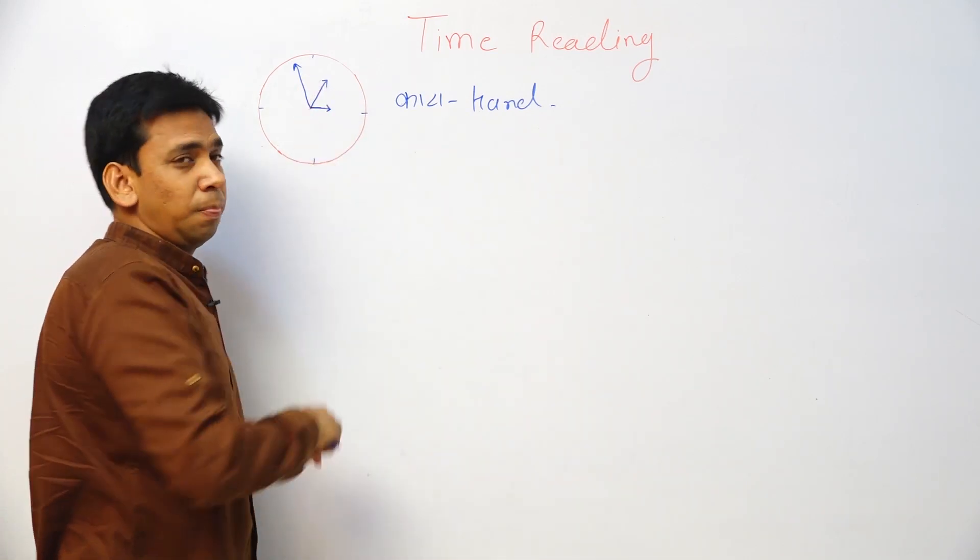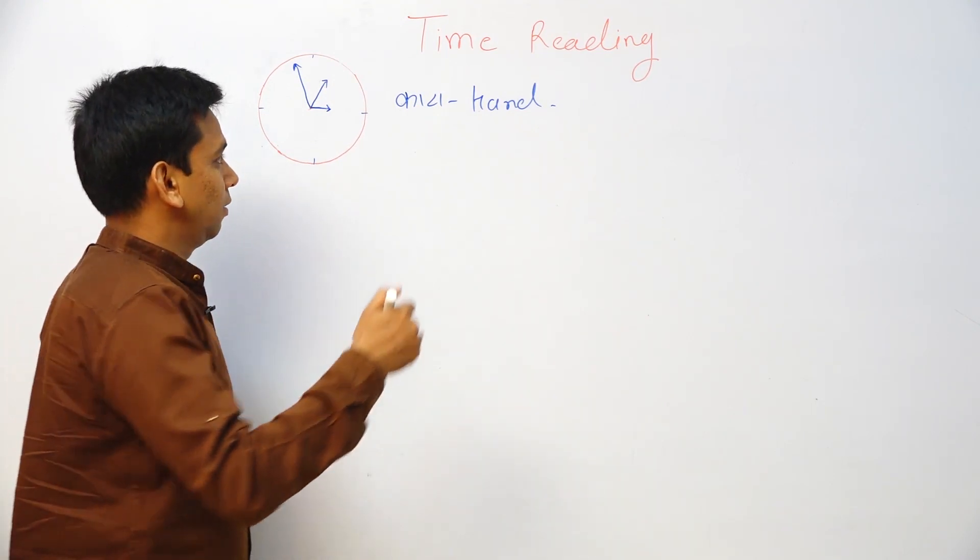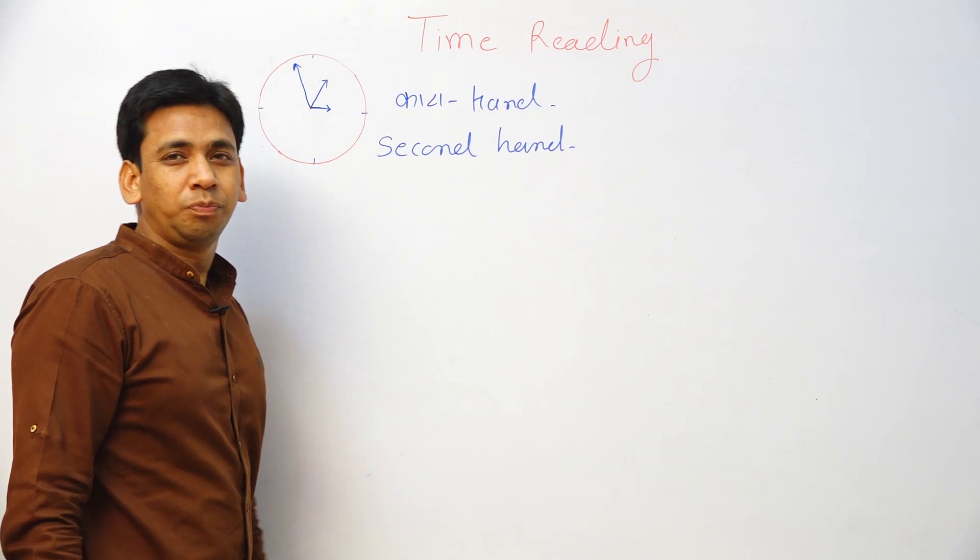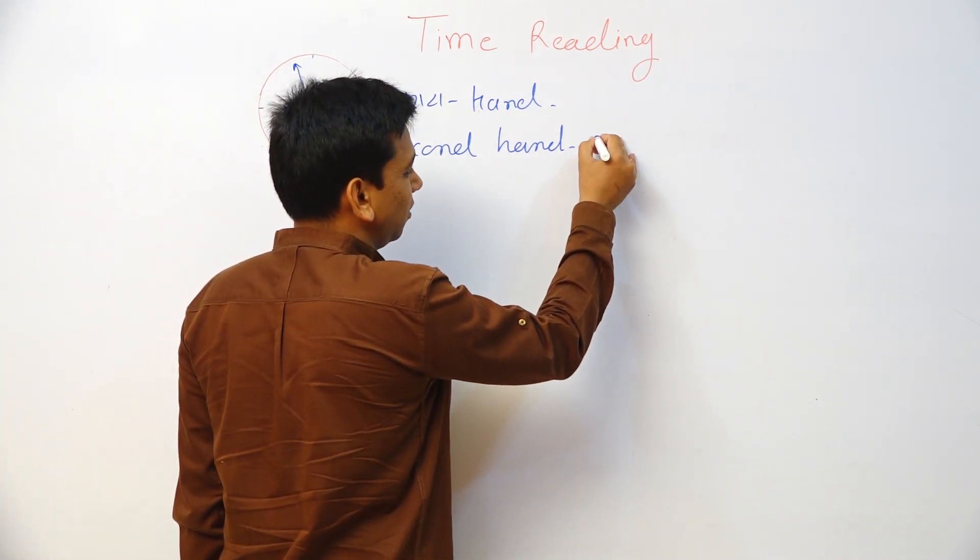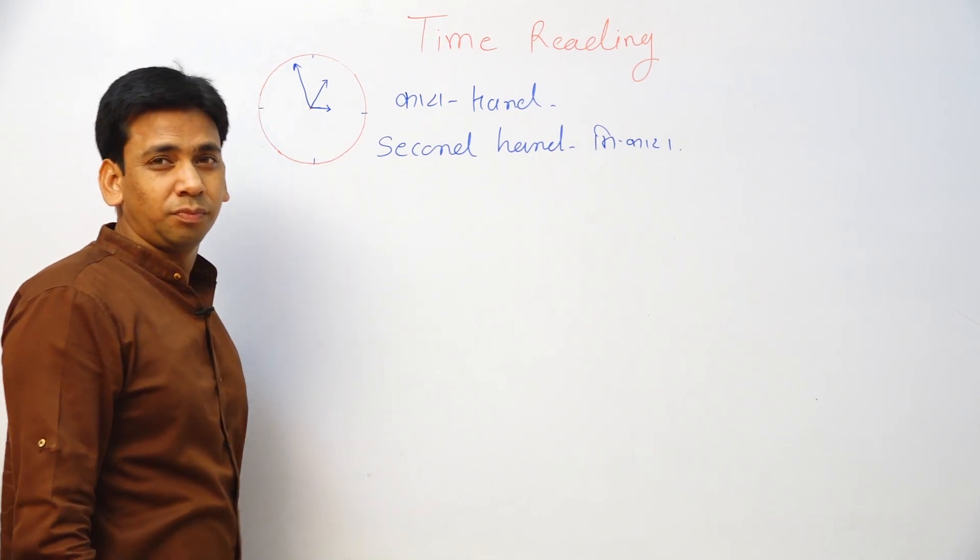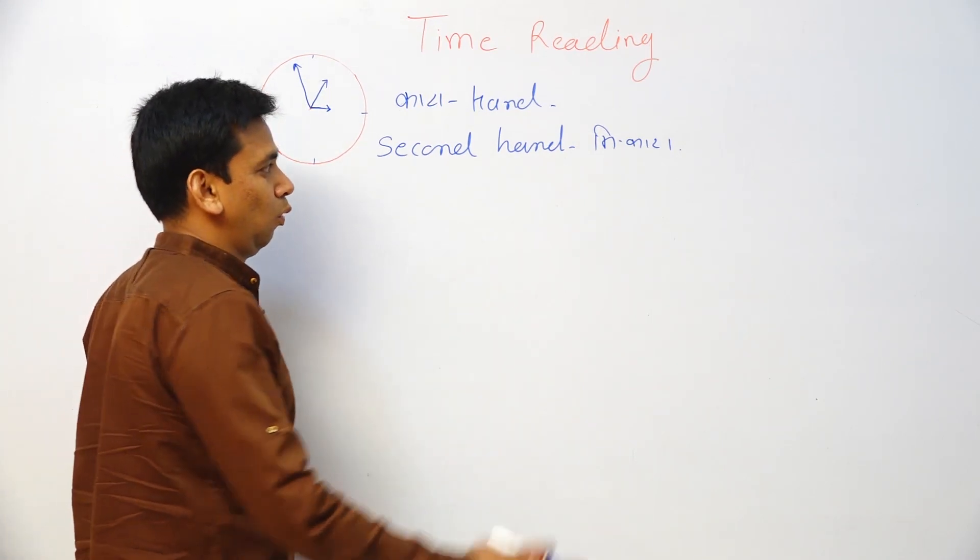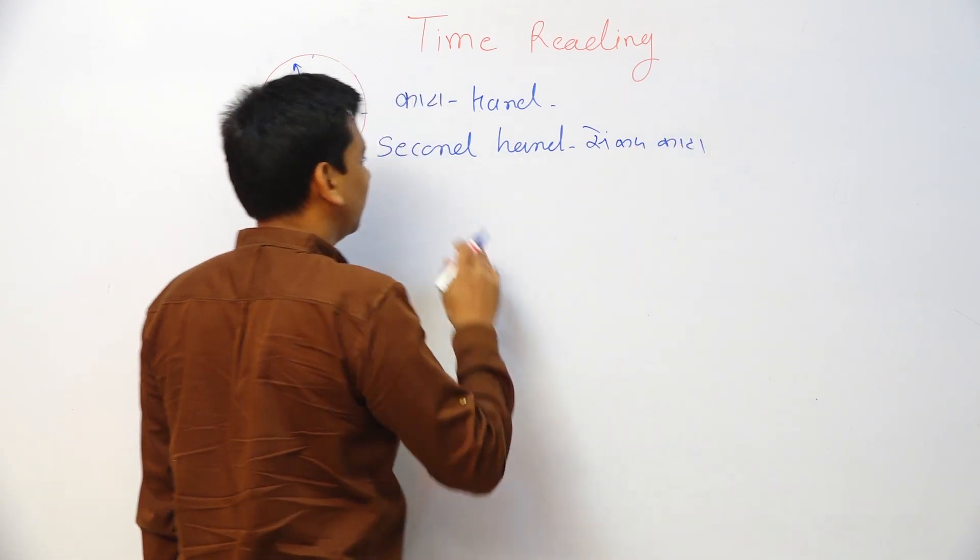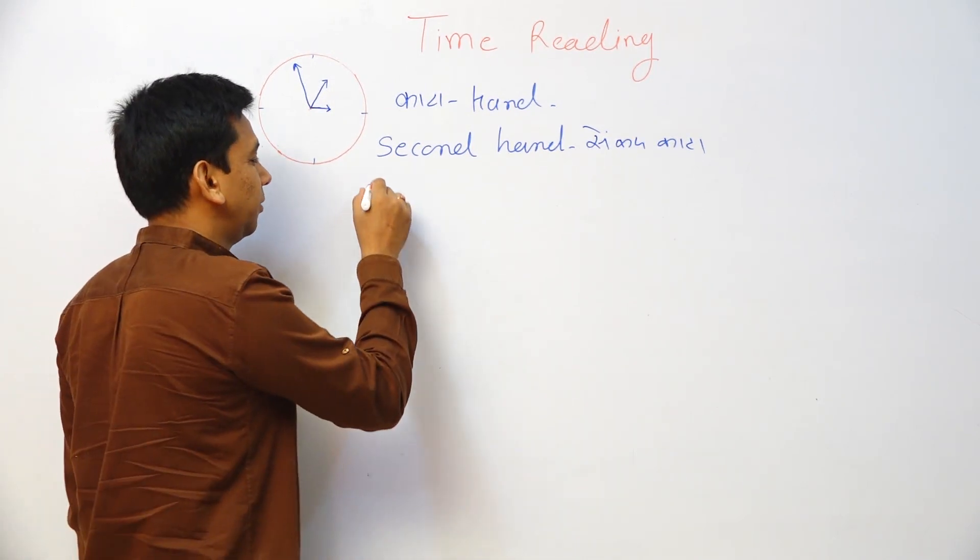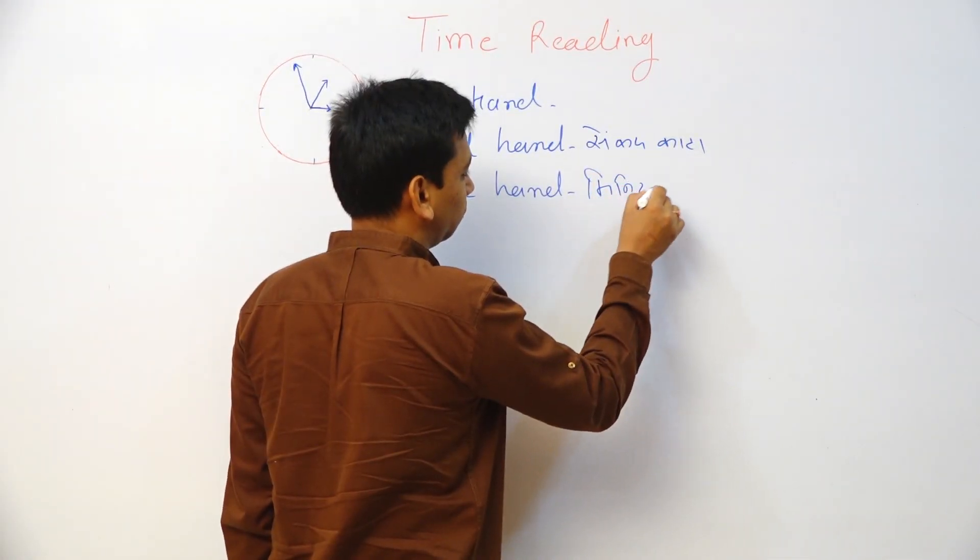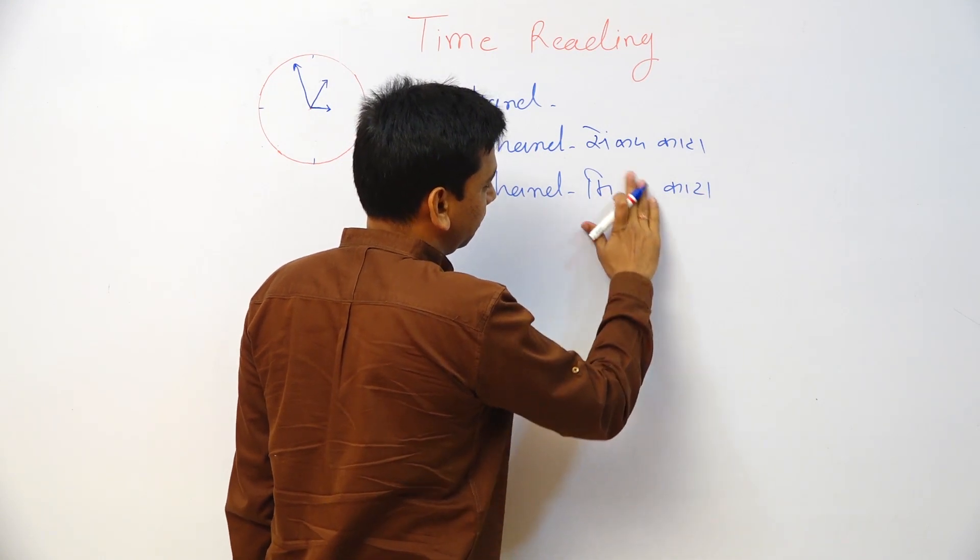How many hands are there? There are three hands. Every clock generally has three hands. First it's called the motor hand. That is called second hand. What is the second hand? The second hand - minute hand.